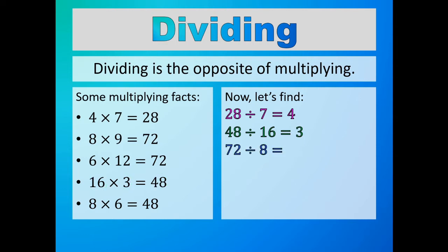Let's now find 72 divided by 8. So we need the product to be 72 and one of the numbers to be multiplied to be 8. The second and third equations do have a product of 72, but only the second equation — 8 times 9 is equal to 72 — has both the product of 72 and the number being multiplied of 8. The only other number being multiplied is 9. So 72 divided by 8 is 9.